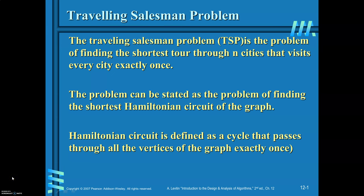Travelling salesman problem. The problem is to find the shortest tour through n cities that visits every city exactly once. In order to find this shortest tour, you are required to find the shortest Hamiltonian circuit of the graph. Hamiltonian circuit is defined as a cycle that passes through all the vertices of the graph exactly once.